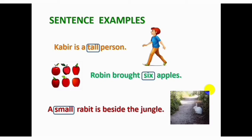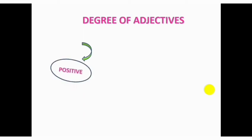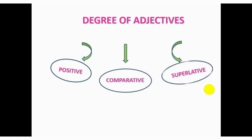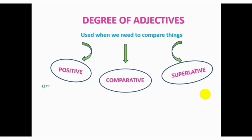Let us discuss about degree of comparison that adjective have. There are three degrees of comparison: positive, comparative and superlative. Degree of comparison is used when we need to compare things. Positive is used to describe. It is not used to compare things. Remember that.